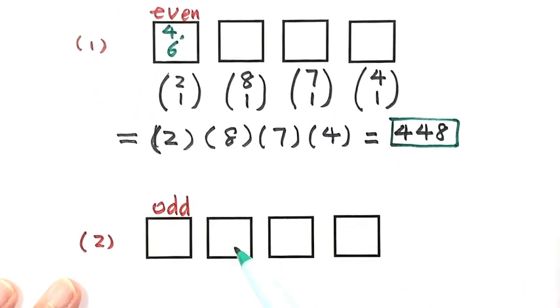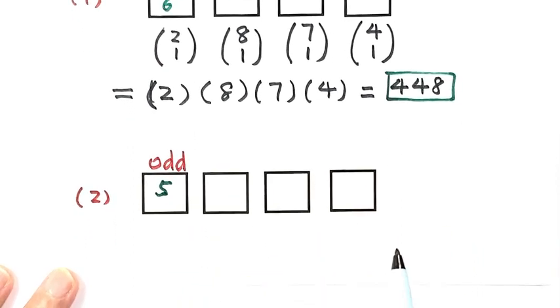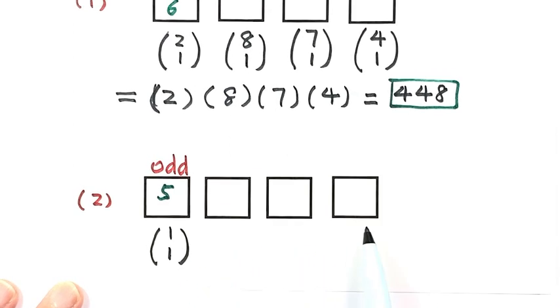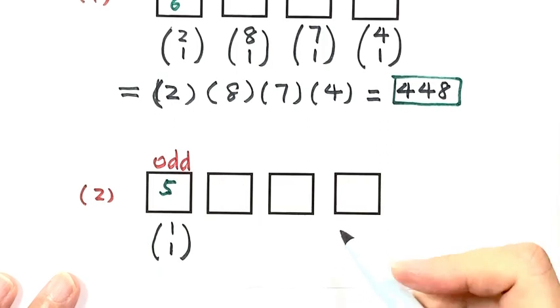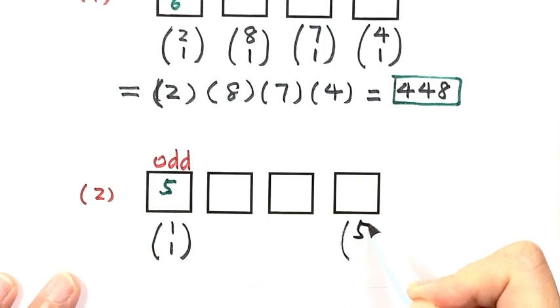Only one possibility, or 1 choose 1. Now let's look at the ones place. Originally we have 5 choices, and we still have 5 choices, so 5 choose 1.